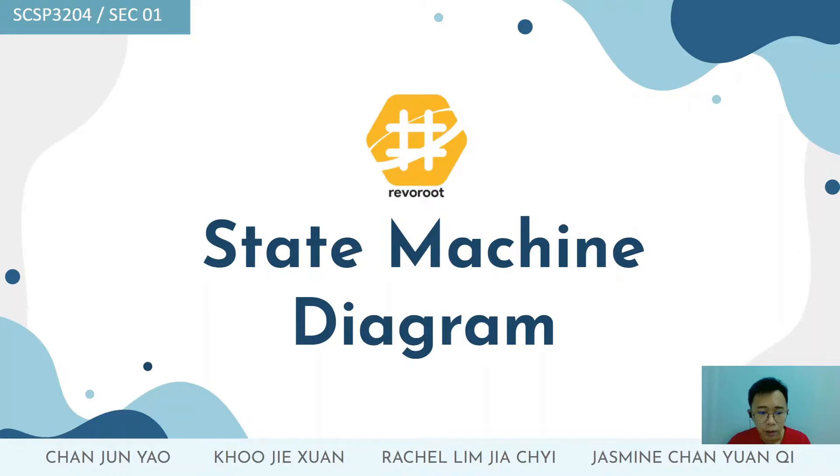Hello everyone and hello Dr. Imbal. I'm Ku Jaisuan and I'm from Team Rebel Roof. My teammates are Chan Junyao, Rachel Lim and also Jasmine Chan. Today we are going to talk about the state machine diagram.